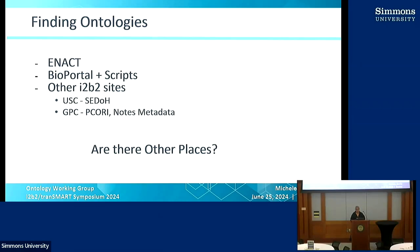The second thing we wanted to expose is how we as a community start collecting and exposing ontologies that you or I have created. We have a lot of people using the ENACT ontology. There are also ontologies available in BioPortal with a set of scripts from the i2b2 team to translate them into i2b2 format. Sites are creating interesting ontologies — Griffin contributed the zip code ontology to the ENACT ontology.